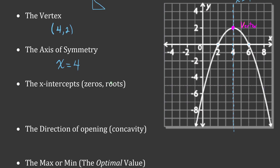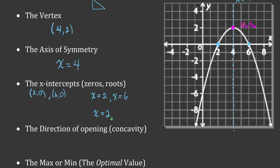The x-intercepts are crucial — you're going to be doing a lot with them in future math. They go by a couple of different names: x-intercepts, zeros, or roots, depending on what you need them for. The left-hand zero is at the point (2, 0). The right-hand one is two points away from the axis of symmetry at x equals 4, so it's at (6, 0). We can write these as coordinate pairs, as zeros x equals 2 and x equals 6, or as x equals 2 or x equals 6.